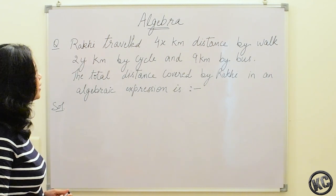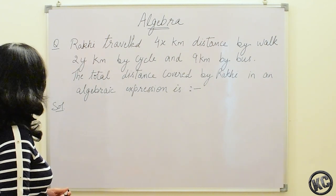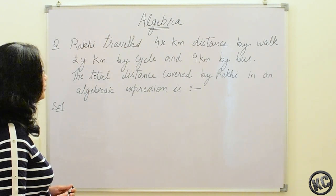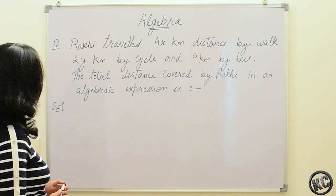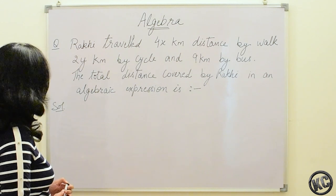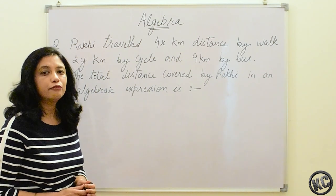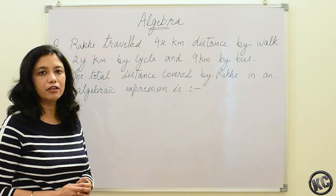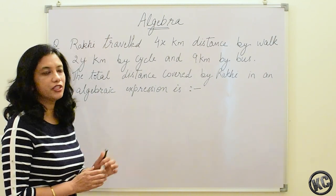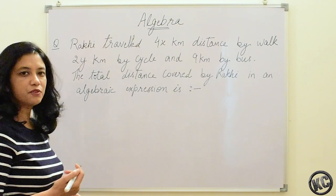Raki travelled 4x km distance by walk, 2x km by cycle and 9 km by bus. We have to find the total distance covered by Raki in an algebraic expression. Let us write the steps first.